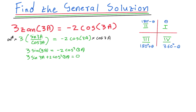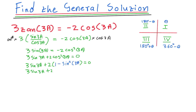So I substitute: 3sin(3a) + 2(1 - sin²(3a)) = 0. Distributing the 2 gives me 3sin(3a) + 2 - 2sin²(3a) = 0. Now I can see this is a quadratic: I have sin²(3a), sin(3a), and a constant.